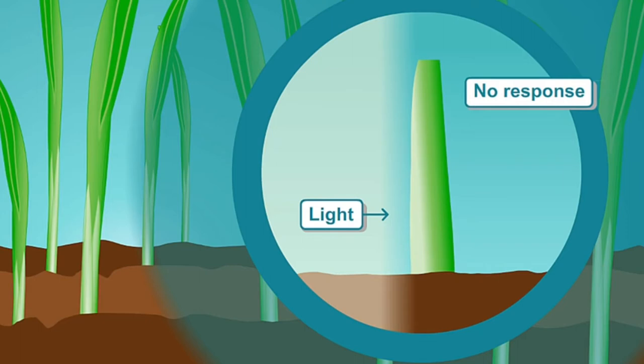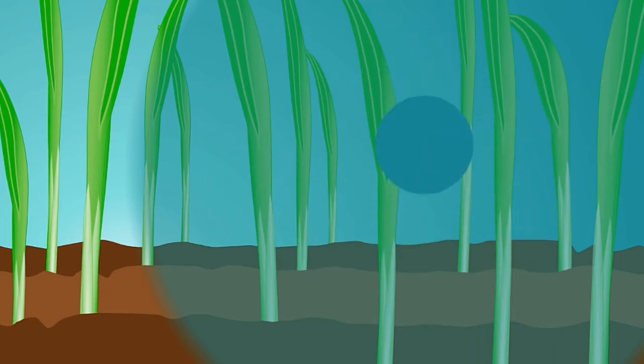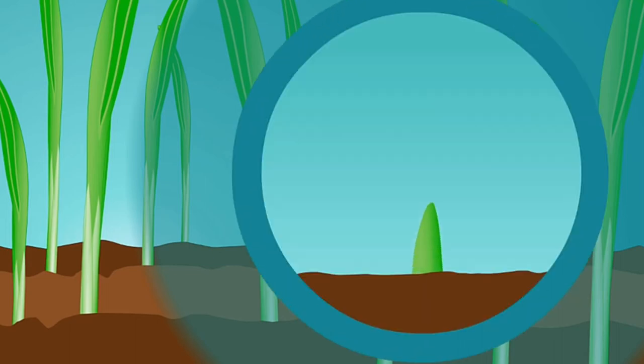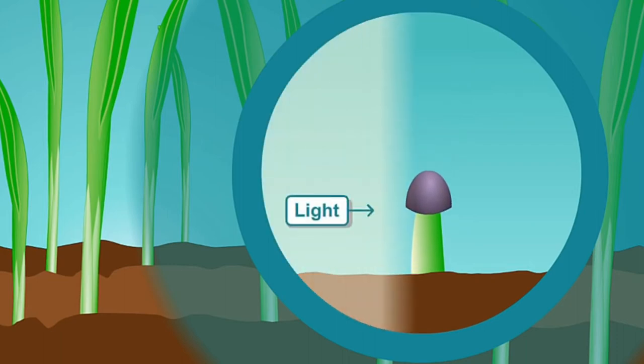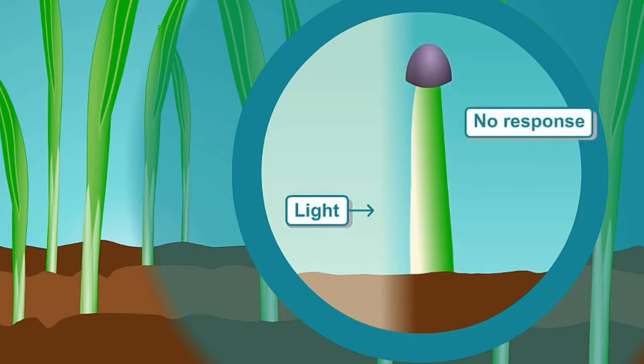This means that either the tip is the origin of the messenger, or it must be stimulated by light. To investigate further, Darwin covered the tip to prevent light from reaching it. The lack of bending response confirmed that the tip must be stimulated.